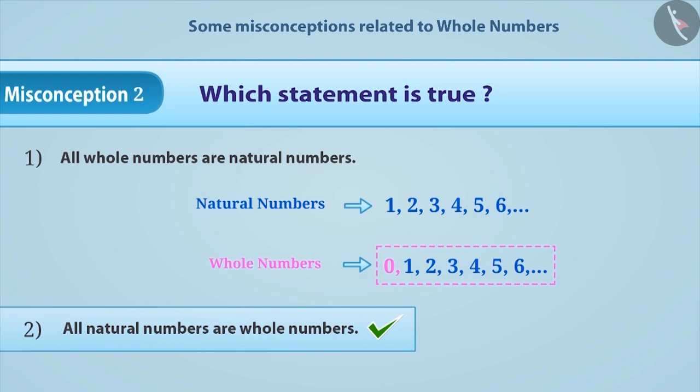Often there is a misunderstanding that all whole numbers are natural numbers. This is a misunderstanding because 0 is not a natural number.